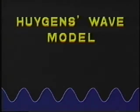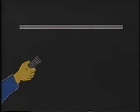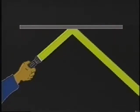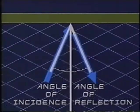Huygens used waves to explain several other behaviors of light, including geometric reflection. When a mirror reflects a light beam, the angle of incidence always equals the angle of reflection. Water waves behave the same way, although their behavior can appear confusing. Note the direction of propagation to the wall and away from it — the angle of incidence is equal to the angle of reflection.